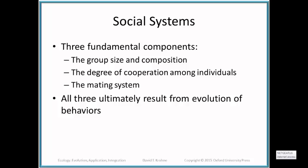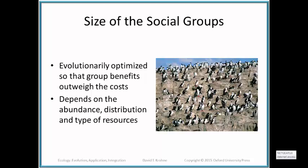The size of a social group is determined by evolutionary factors. If the group is too large, there are problems with inbreeding and resource competition. If the group is too small, you may not have the benefits of being in a group. The size of a social group will depend on the abundance, distribution, and type of resources, and the interactions of individuals within the group.